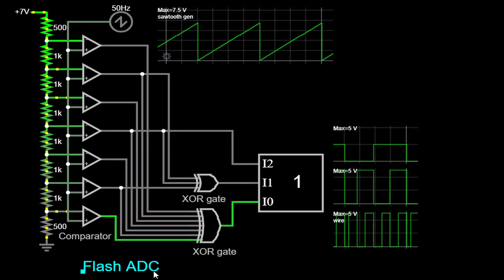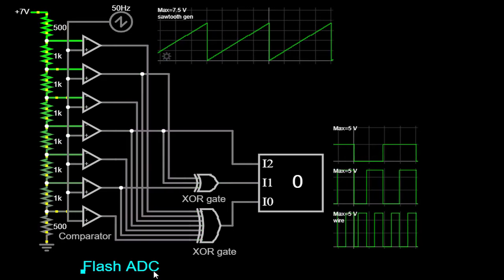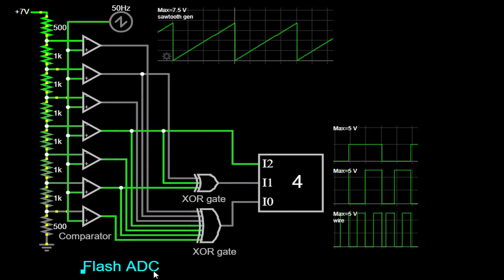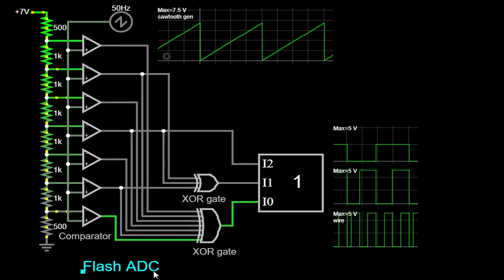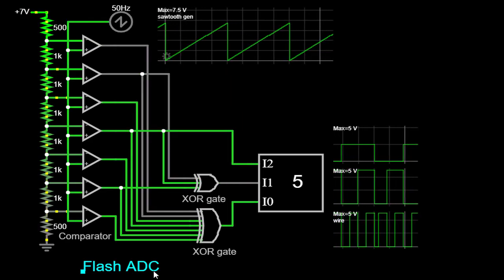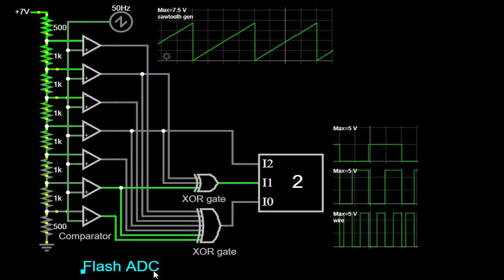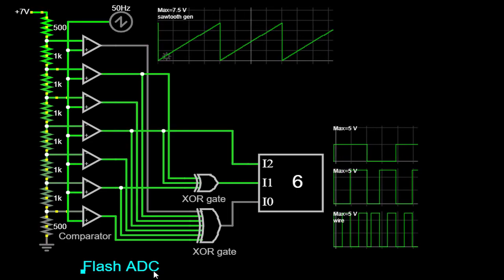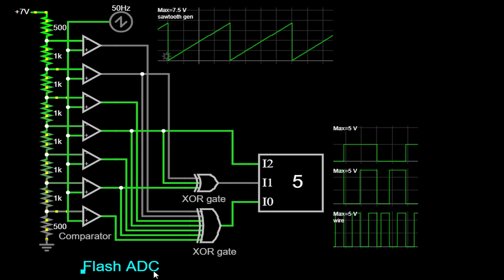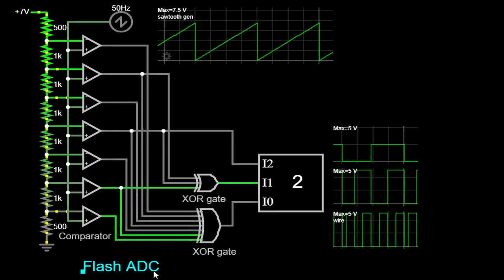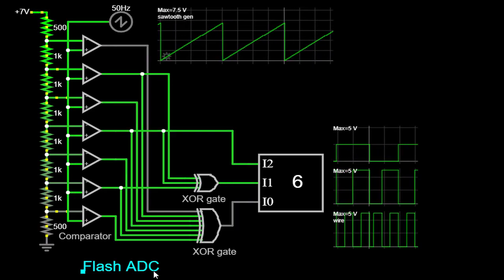These characteristics make them ideal for applications that require rapid and accurate digitization of analog signals. By leveraging a parallel architecture with multiple comparators, Flash ADCs can achieve high-speed conversion rates, making them suitable for use in data acquisition systems, audio processing, video encoding, and other time-critical applications.